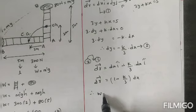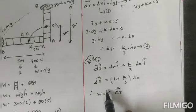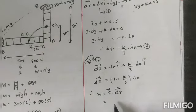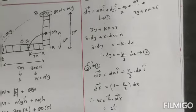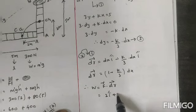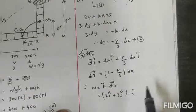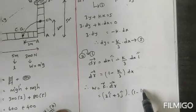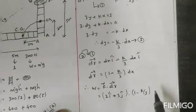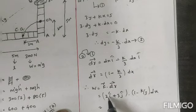In this question, let's calculate the work done, that is force into displacement. Force value you know is 2i cap plus 3j cap into 1 minus k by 3 into dx.